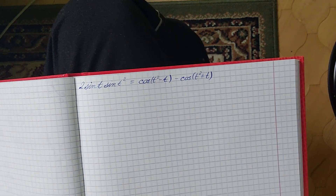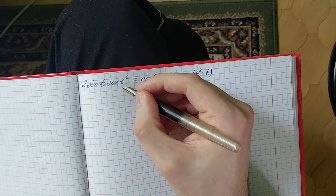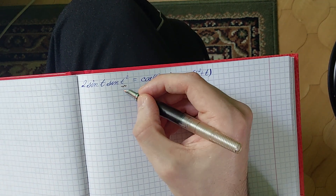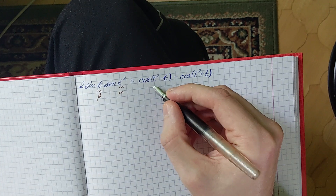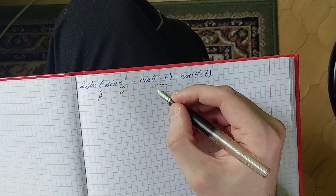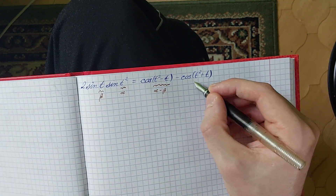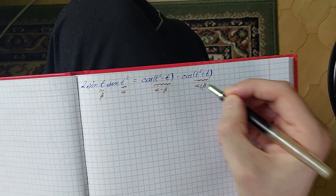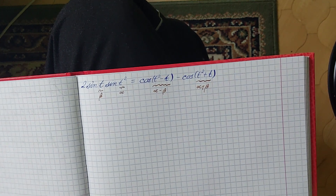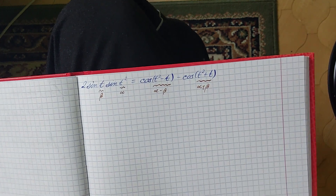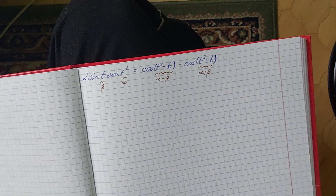Why is that, you may ask? Here: treat t squared as alpha and treat t as beta. Then we have alpha minus beta and alpha plus beta. This means that our integral can be rewritten.